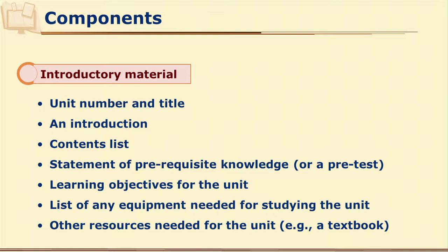For some units, some equipment may be needed. For example, if that particular learning is about drafting, engineering drawing, then learners may require some material for practicing. The material can even be for tailoring. So first we need to mention for that particular module what equipment should be kept ready by the learners. There may be some other references also, so we may mention reference books which need to be kept ready to refer while going through this particular module.